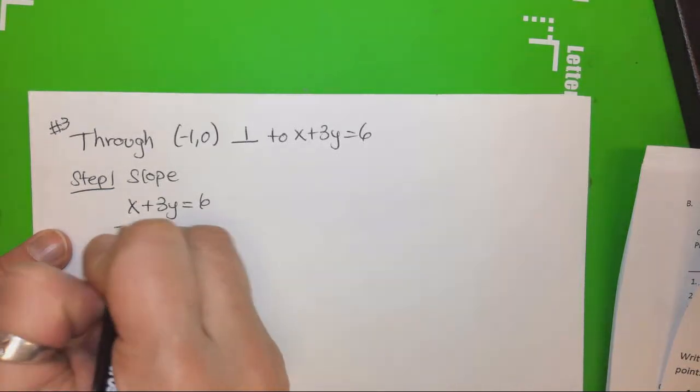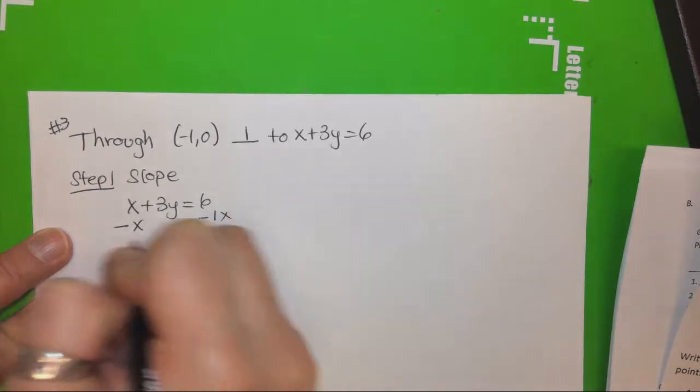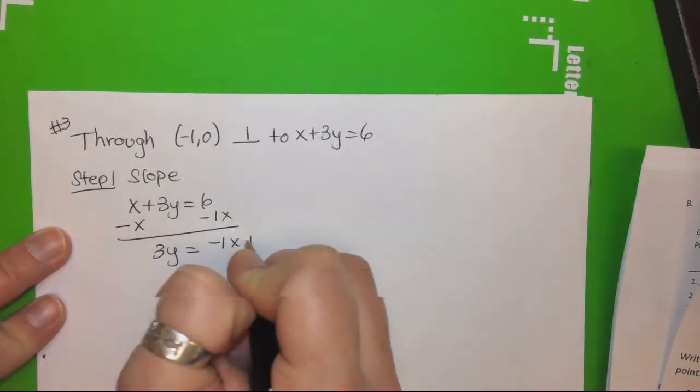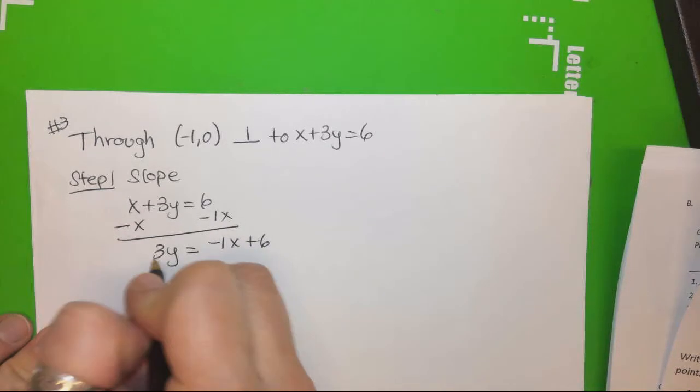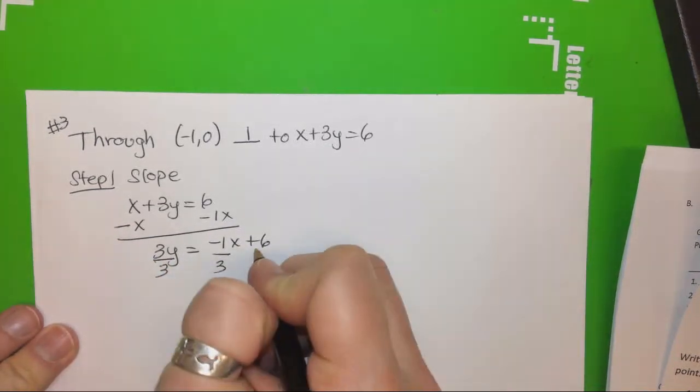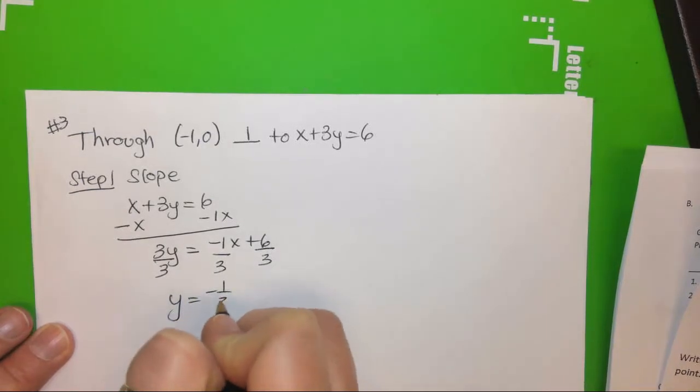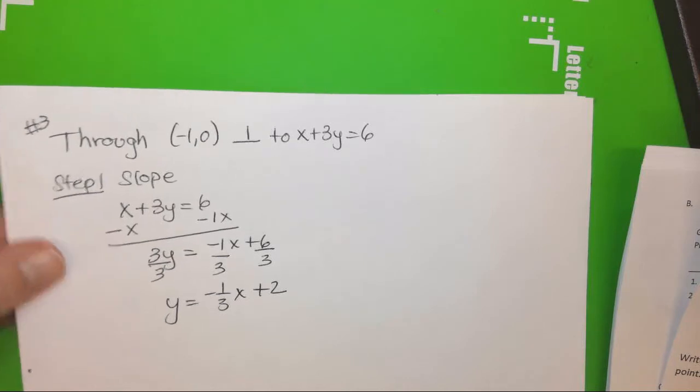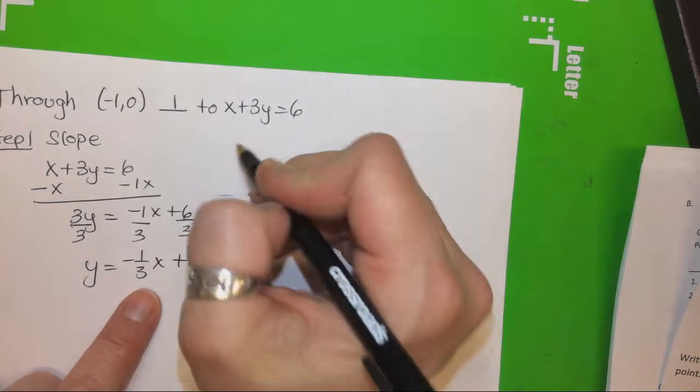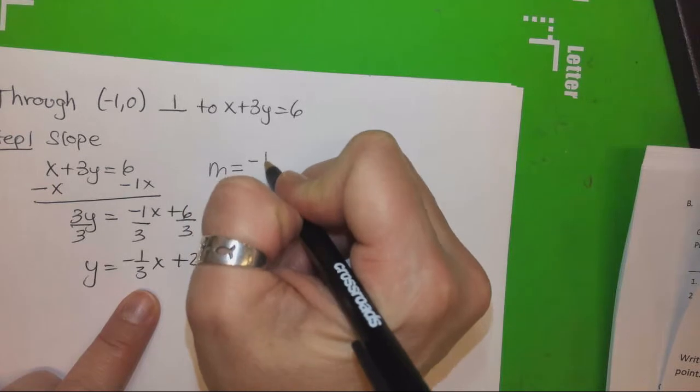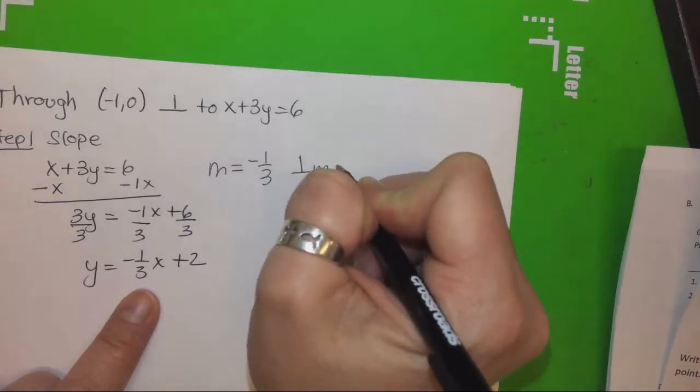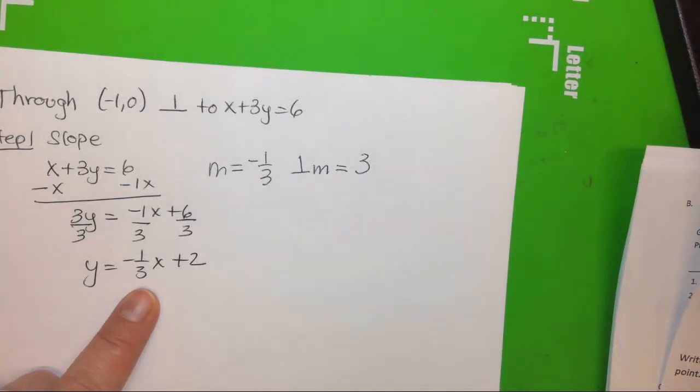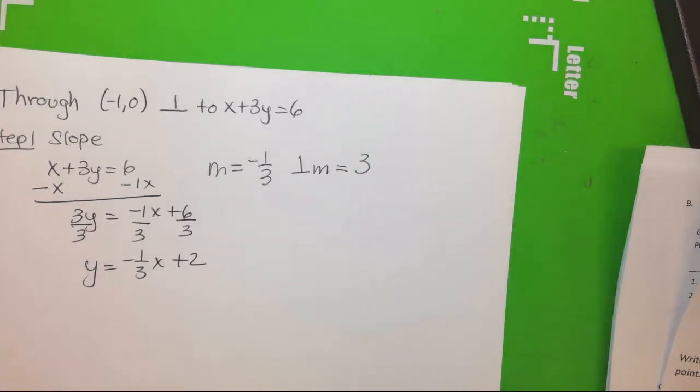So, to solve for y, we're going to subtract 1x from both sides. And we'll get 3y equals negative 1x plus 6. And then we're going to divide by 3. And I get y equals negative one-third x plus 2. So, what is the slope of this line? Negative one-third. So, the perpendicular slope would be what? 3. Positive. Switch the sign. Flip it. 3 over 1.